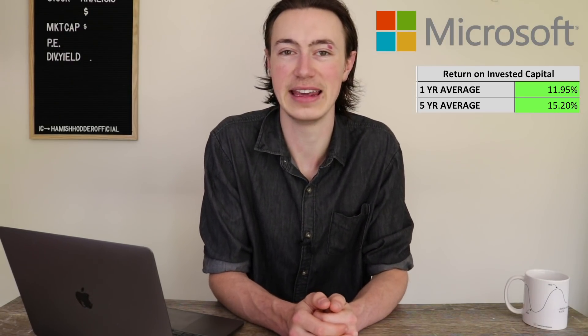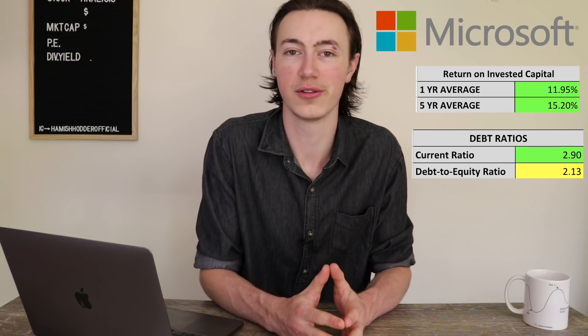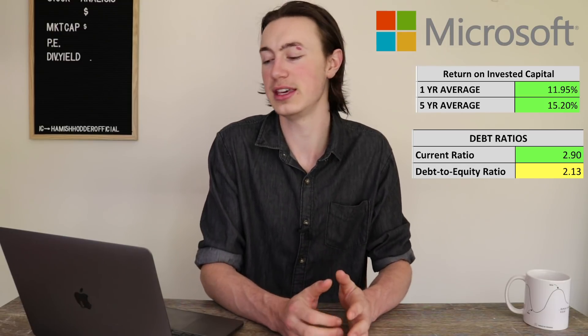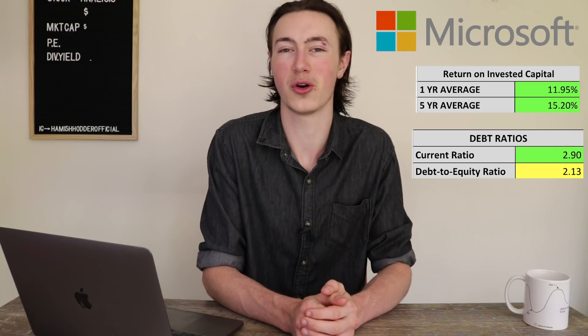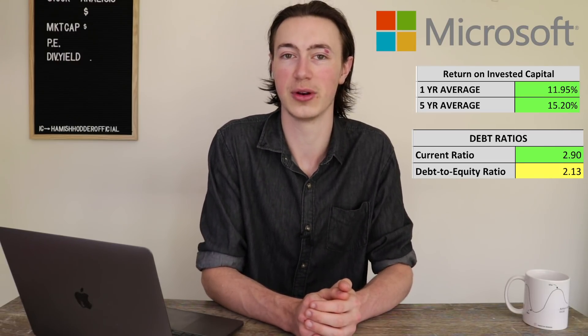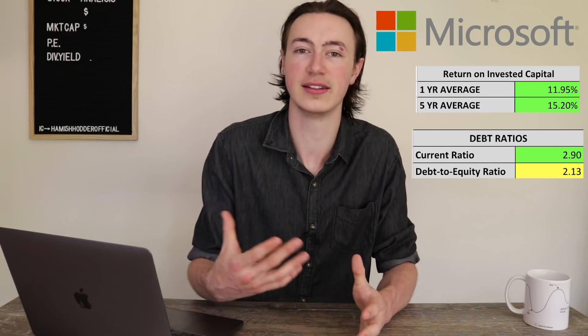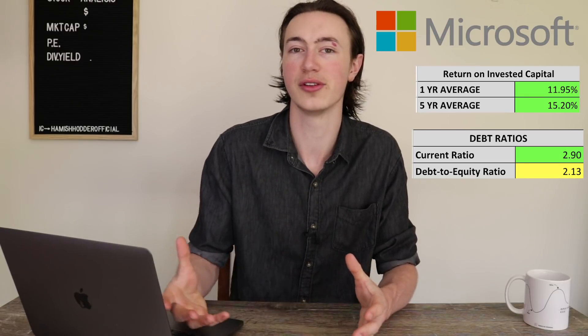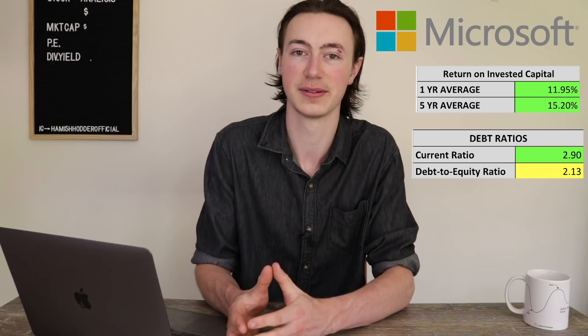Let's now look at their debt management. They have a current ratio of 2.9, which is excellent — well above the minimum of 2 that I look for. In terms of the debt-to-equity ratio, they have a ratio of 2.13, which is not so great — quite a high amount of debt relative to equity. This isn't inherently bad, but it does increase the uncertainty of those future cash flows, and it probably increases the return we should demand on this stock because of that added debt.